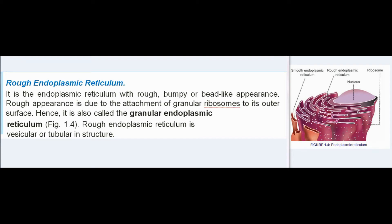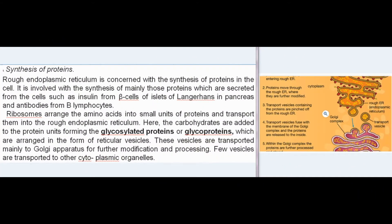Rough endoplasmic reticulum has a rough, bumpy, or bead-like appearance due to the attachment of granular ribosomes to its outer surface, hence it is also called granular endoplasmic reticulum. It is vesicular or tubular in structure. Functions include synthesis of proteins — particularly those secreted from cells such as insulin from beta cells of the islets of Langerhans in the pancreas, and antibodies from B lymphocytes.